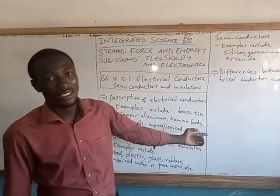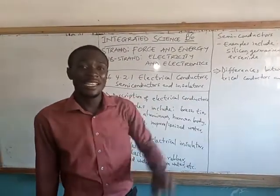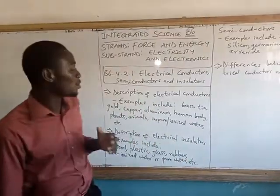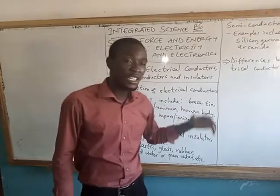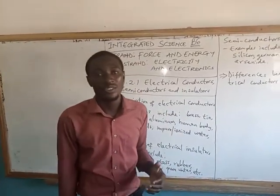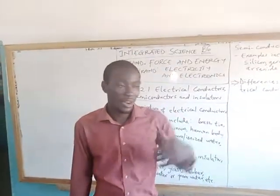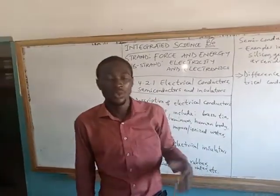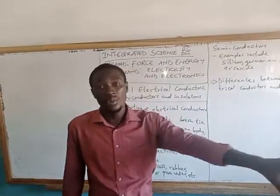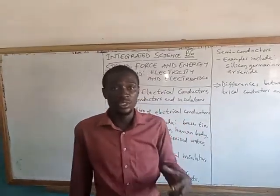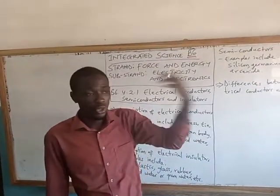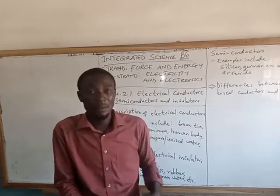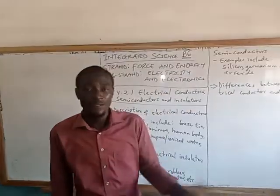We have the human body, which is able to conduct electricity. That is why when you touch a naked wire, you get shocked. Because the human body is full of ions, which are able to move and conduct electricity to various destinations. So once you touch a naked wire or an electric source, these charges can easily move through you, because you have these ions and water full of ions in your body. So we become good conductors for electricity.